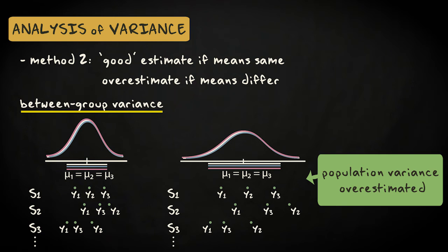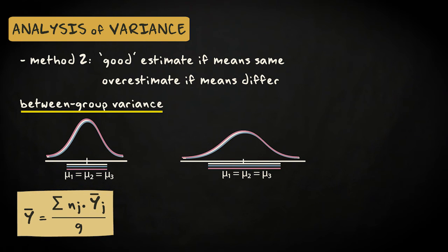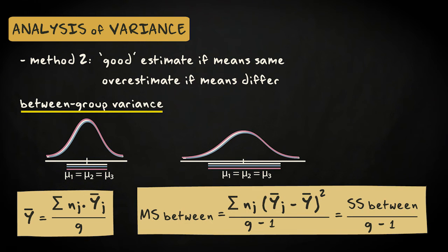To calculate the between-group variance, we need to know the grand mean — the mean of the means — which we calculate by multiplying each group mean by the number of observations in that group, adding these together, and then dividing by the total number of observations. We calculate the between-group variance by taking each group mean, subtracting the grand mean, and squaring the difference, multiplying by group size, then summing these squared differences and dividing by the number of groups minus 1.